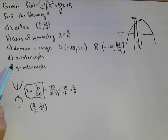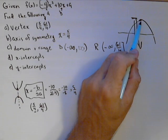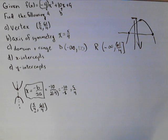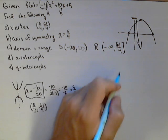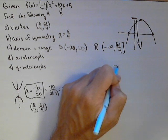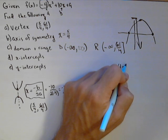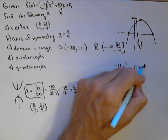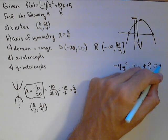Next thing is our x-intercepts. Because our vertex was above the x-axis and it opened downwards, we see that we have two of them. So let's see if we can do this algebraically. We want to find where negative 4x squared plus 10x plus 9 equals 0.